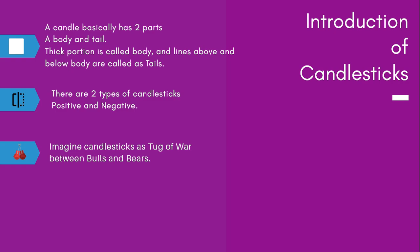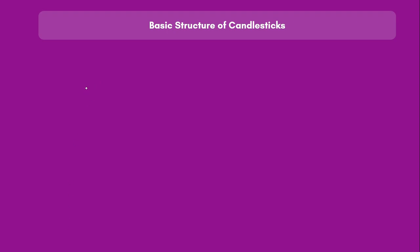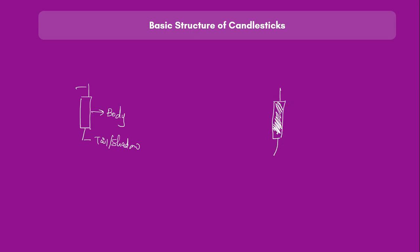The thick part in between is called the body, and the thin projections above and below are called the tail or shadow. Both positive and negative candles look alike structurally — the only difference is the color. A positive candle may be green and the negative candle red, or positive in white and negative in black. Different charts use different color patterns.